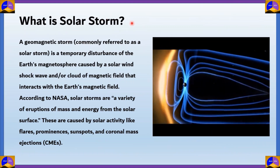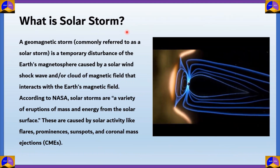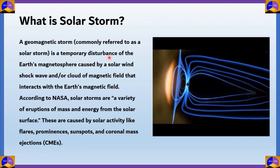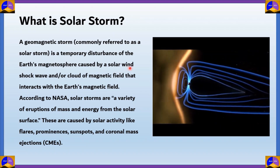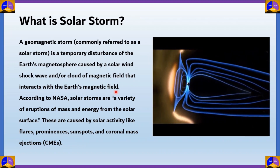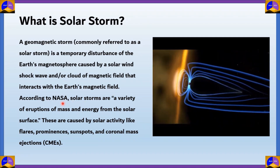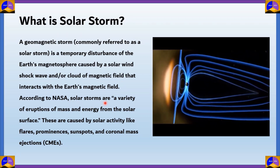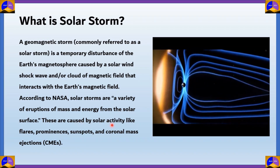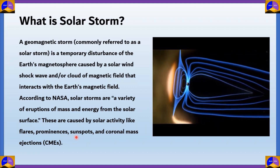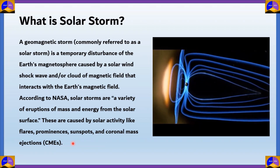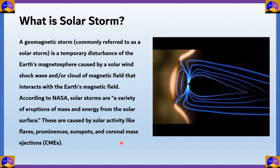What is a solar storm? If you are asking this question to a scientist, they would refer to this phenomena as a geomagnetic storm. A geomagnetic storm is a temporary disturbance of the Earth's magnetosphere caused by a solar wind shockwave and/or cloud of magnetic field that interacts with the Earth's magnetic field. According to NASA, the National Aeronautics and Space Administration, solar storms are a variety of eruptions of mass and energy from the solar surface. These are caused by solar activity like flares, prominences, sunspots, and coronal mass ejections, or CMEs. In order to understand a solar storm better, we need to understand solar activities such as flares, prominences, etc. that happen on the sun.